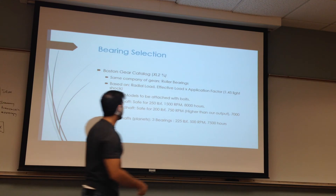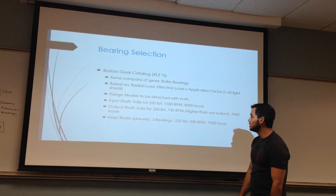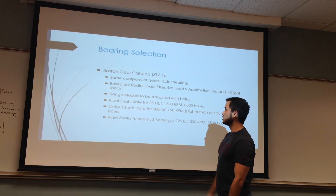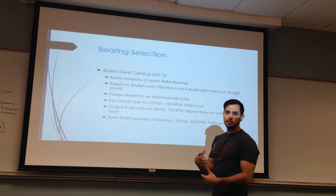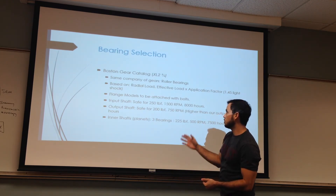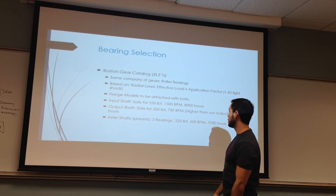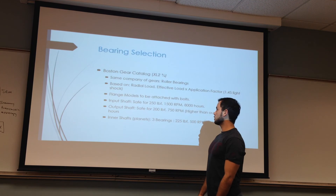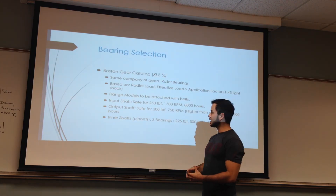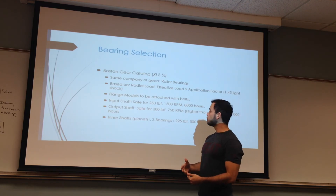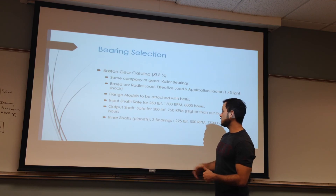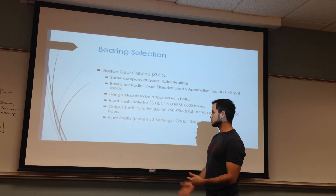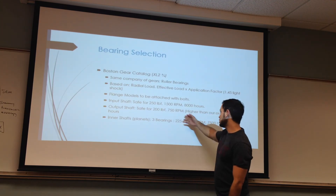For bearing selection, the model number for our first bearing is an XL2, which goes on the shaft that is 3/4 of an inch in diameter. We used the same company as the gears for logistical purposes. Based on the Boston Gear catalog, you first get the radial load, then the effective load on the bearing, multiplied by the application factor of 1.45 for light shock, and then you choose the bearing. We chose a flange model to be attached with bolts to the case. The input shaft was safe up to 250 pound-force and 1500 RPM for 8,000 hours. The output shaft and the inner shaft for the planets used separate bearings as well.